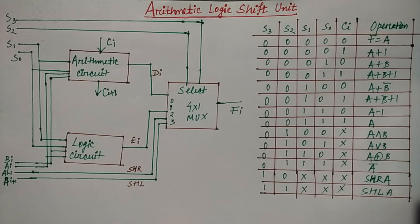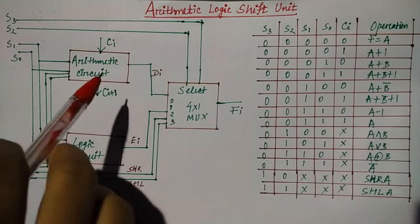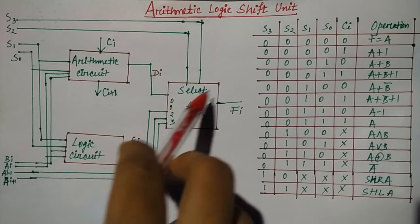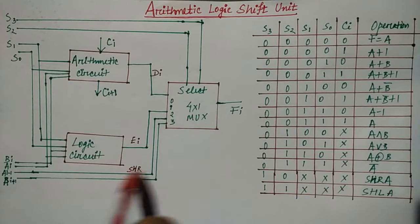So basically, what happens in this unit? It combines all the functions. That is, one is an arithmetic circuit, one is a logic circuit, and one is a shift circuit.